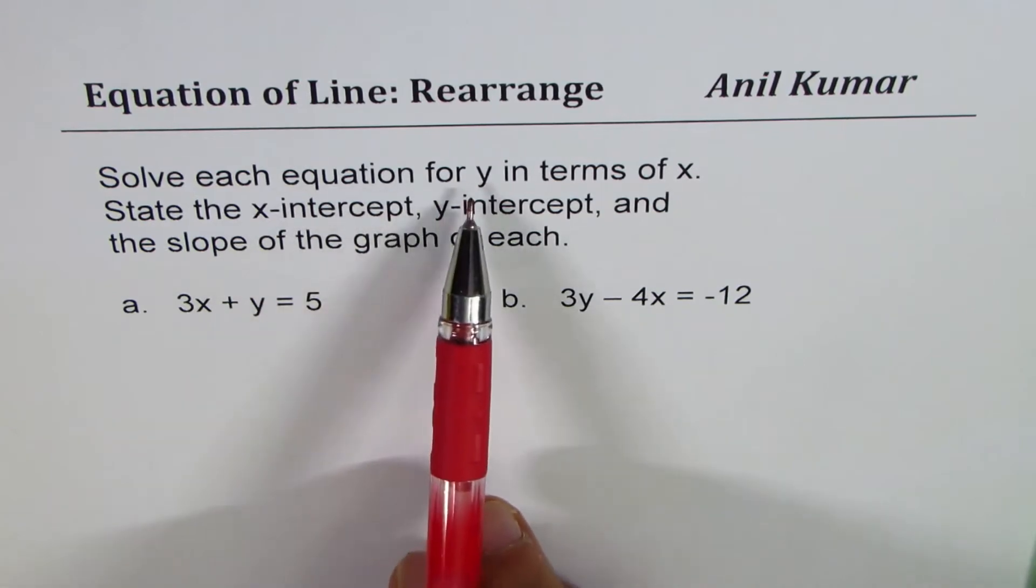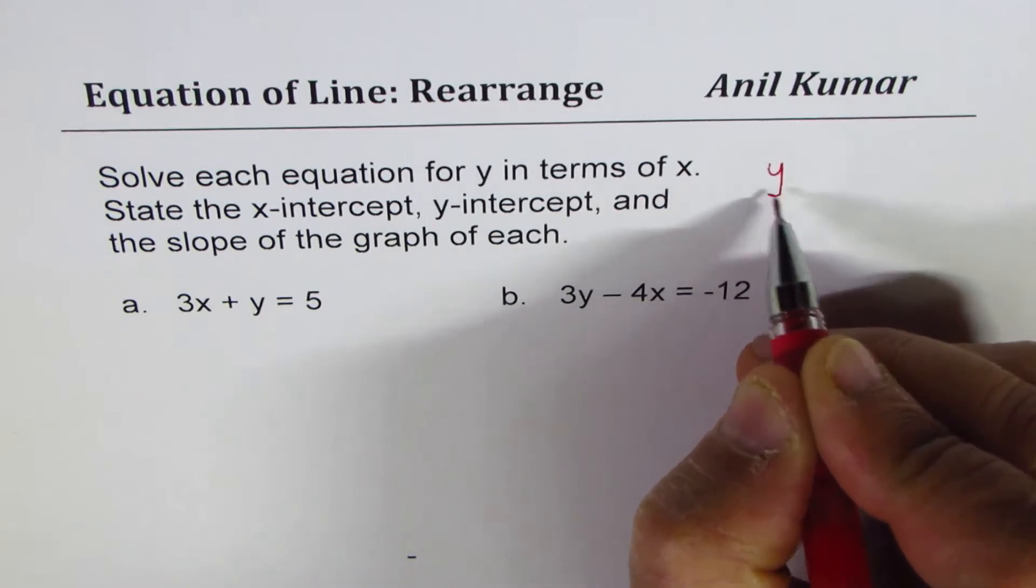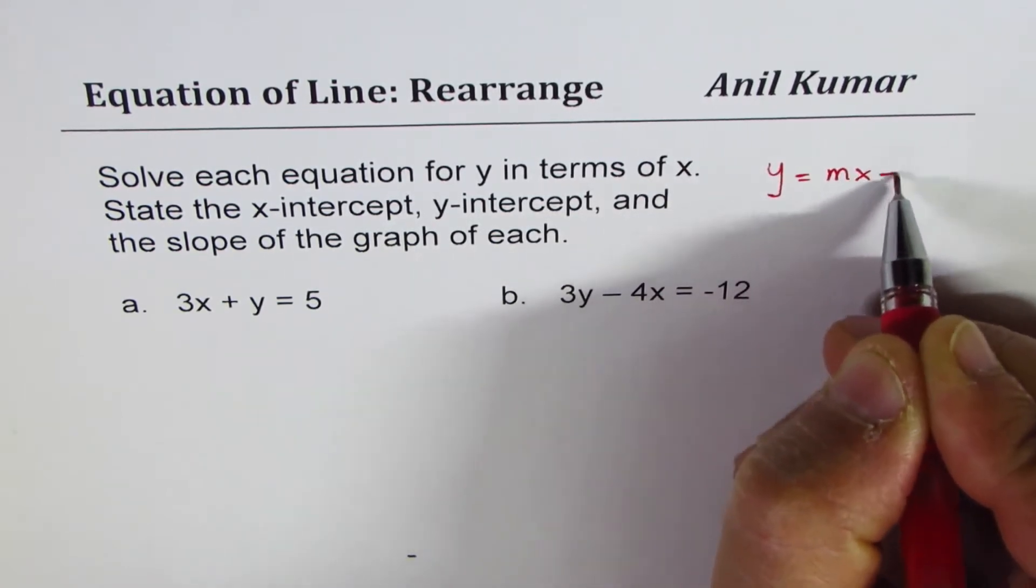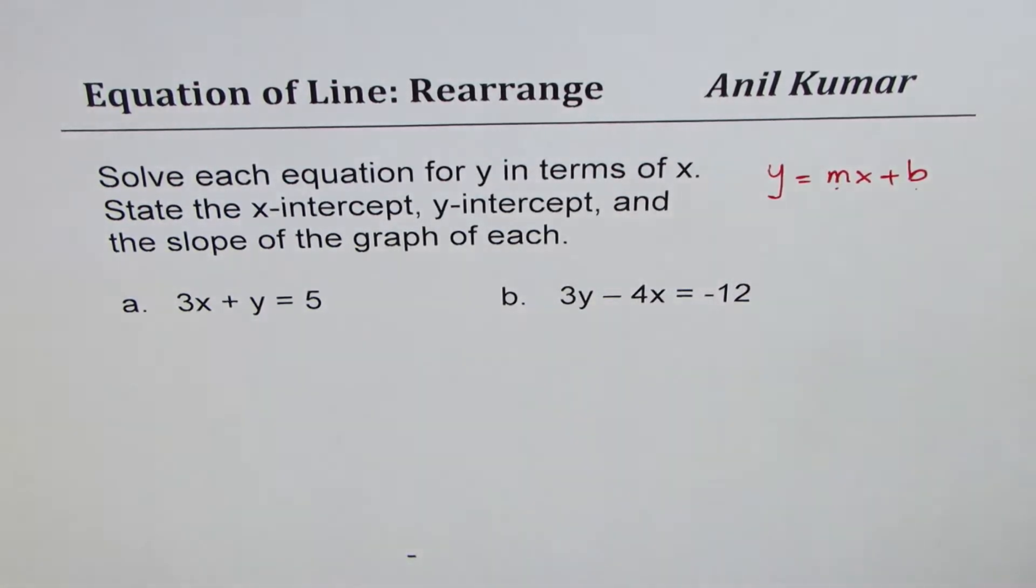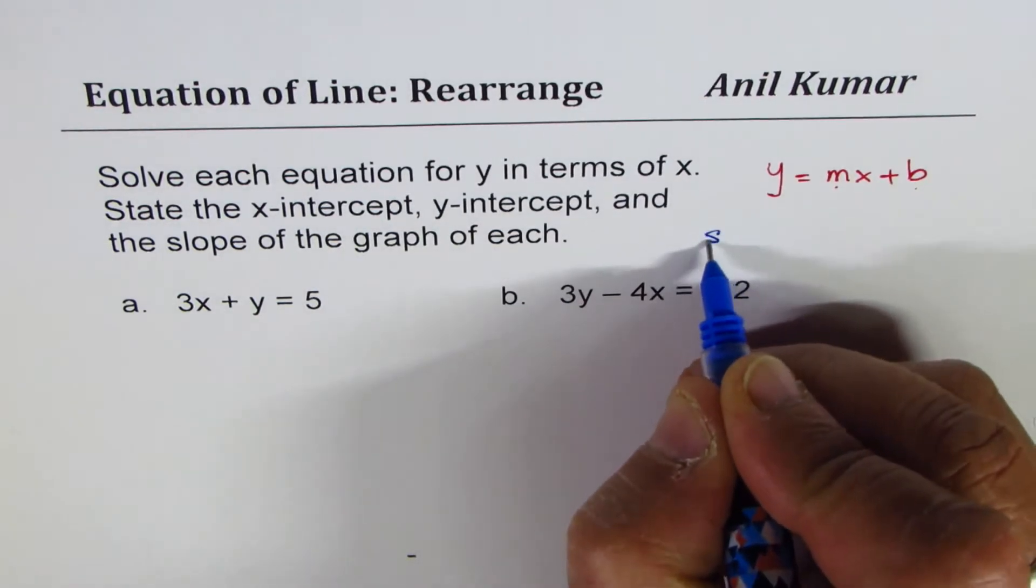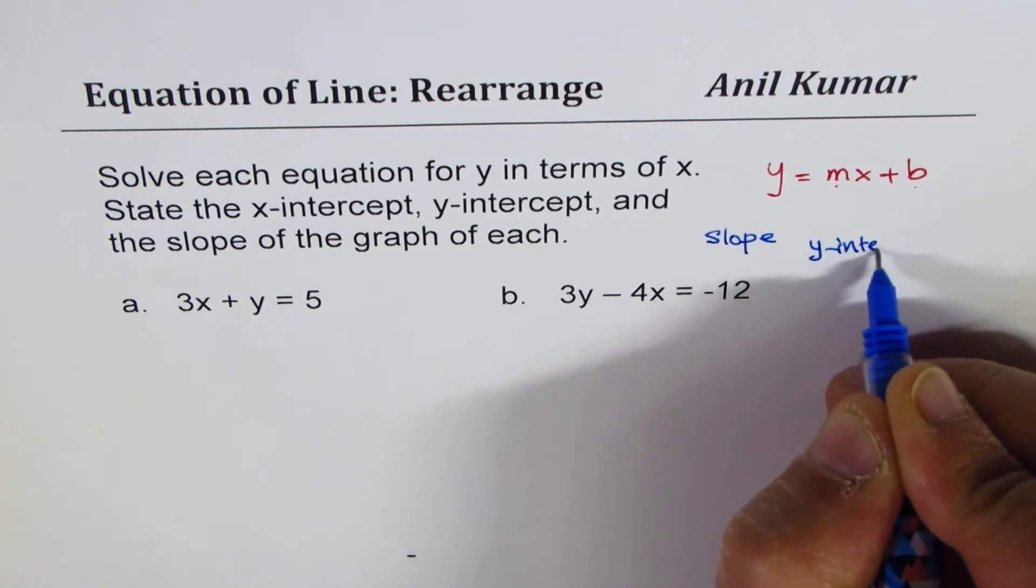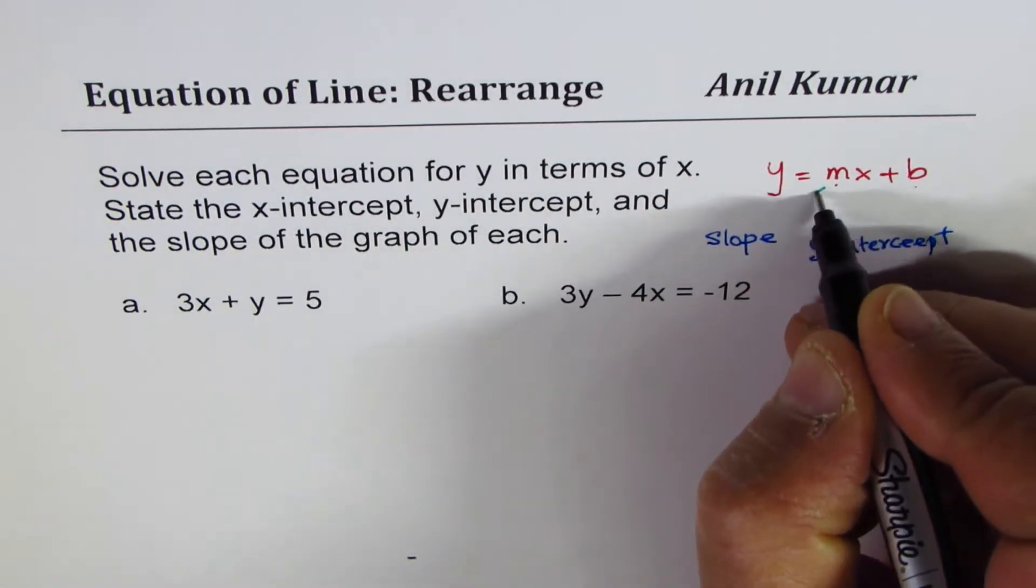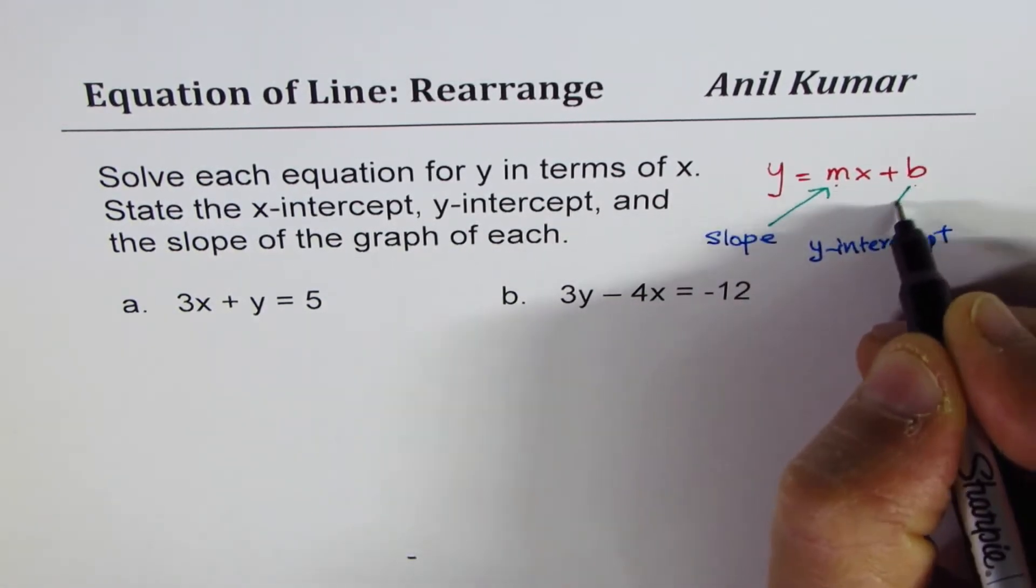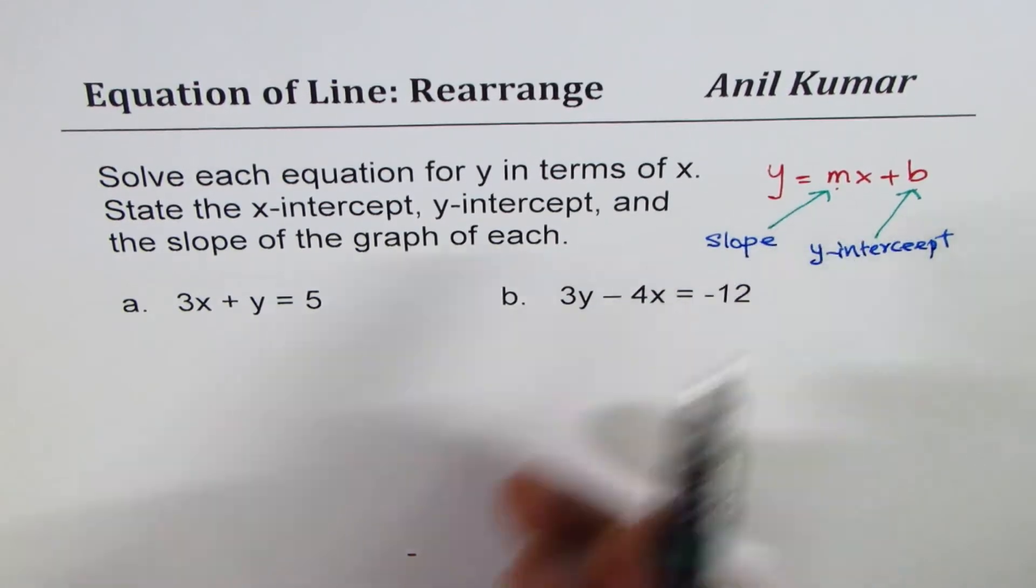When we say solve each equation for y in terms of x, we want to write our equation in the form y equals to mx plus b, where m is the slope, b is y-intercept. So in such an equation, m is going to be the slope and b is going to be the y-intercept. So when we solve y in terms of x, that is what we will get.